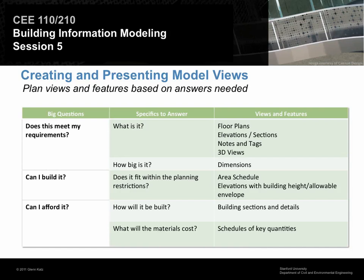Early on when planning a project, you want to know: does this design meet my requirements? Floor plans, 3D views, and elevations help explain what your design is. Dimensions and scale objects help answer how big it is. Schedules and annotations on elevation views help determine whether it meets planning restrictions, the right square footage, correct ratios, or shadow impacts on other buildings. Building sections and details illustrate how things will be built, and schedules can help estimate construction costs. These are all different types of views you create to answer different questions.